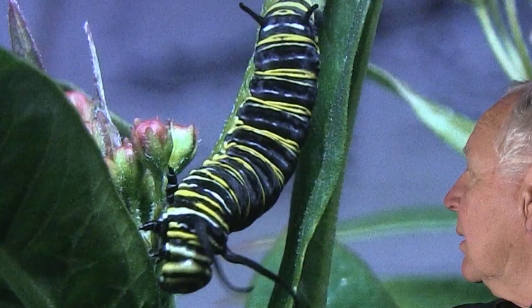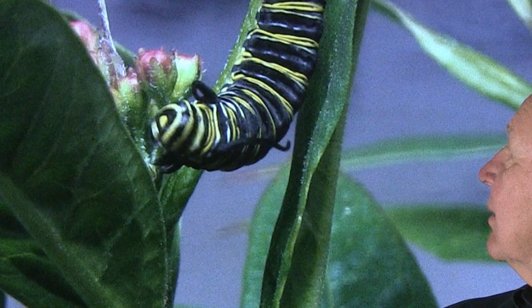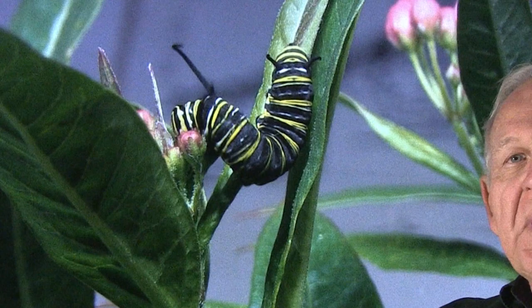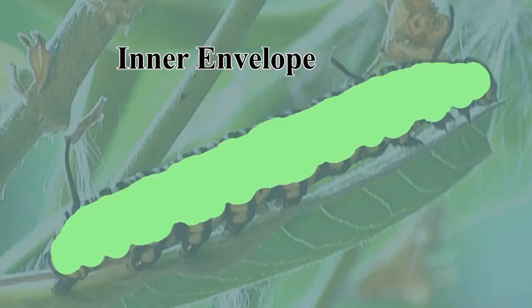This is a monarch caterpillar munching out. Notice how flexible it is. It has an exoskeleton of chitin, which can sometimes be like armor — for example, on a beetle — but on many larval forms it's a softer, gentler kind of chitin.